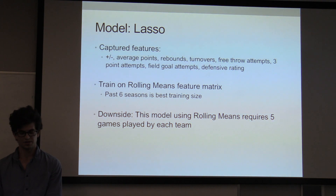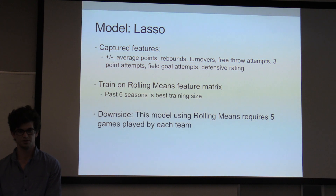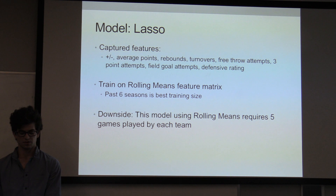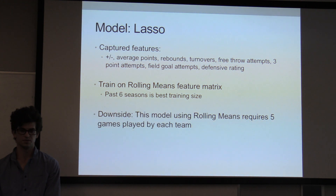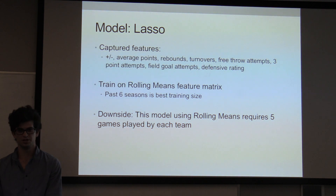The downside of using rolling means is that it requires a certain number of data points in order to make a calculation. I used it requiring five previous games, so this model would not be able to make a prediction if one of the two teams had not played five games in that season yet.